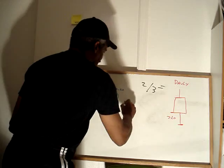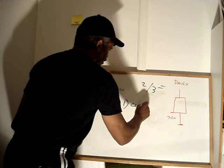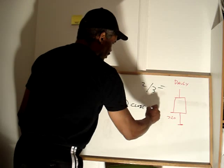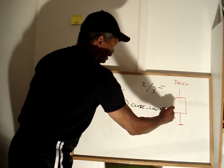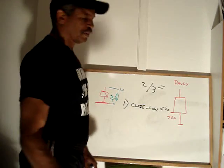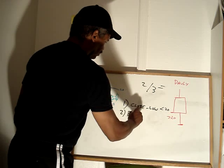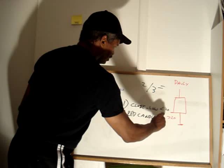We can write it down. One, if the current price or close minus the low of the current daily low, if that's less than 20, that's opportunity. Two, a red candle closes.